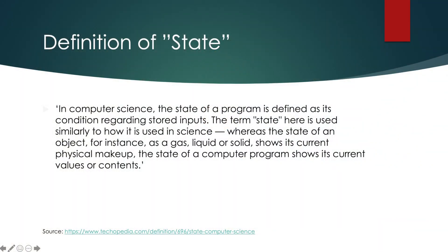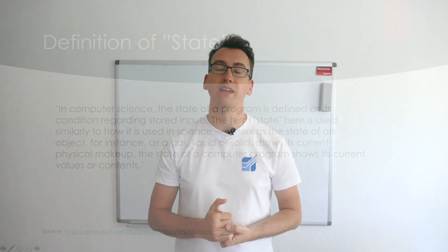Now let's begin with defining state. State is one part of computer science technology. Here is a very good definition from Technopedia: in computer science, the state of a program is defined as its condition regarding stored inputs. The term state here is used similarly to how it is used in science — the state of an object, for instance, as gas, liquid, or solid, describes its current physical makeup.